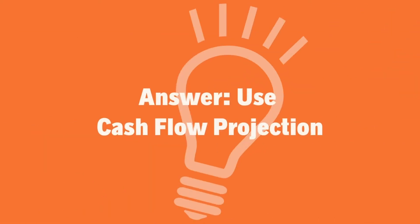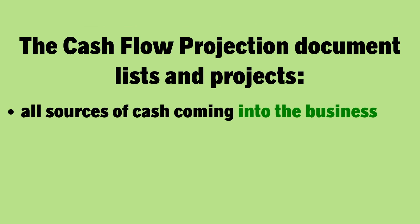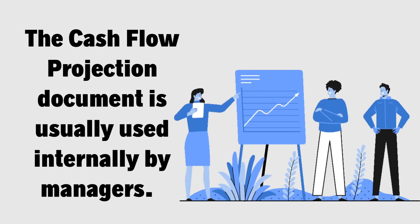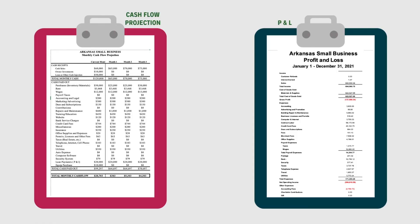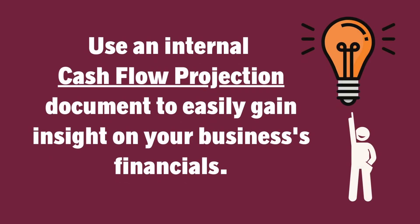The answer is by using a tool called a cash flow projection. A cash flow projection is a document that lists and projects all sources of cash coming into the business and all needs of cash taking cash out of the business. This is usually an internally created report for use by managers, and is slightly different than the formal statement of cash flows that is required for formal financial reporting.